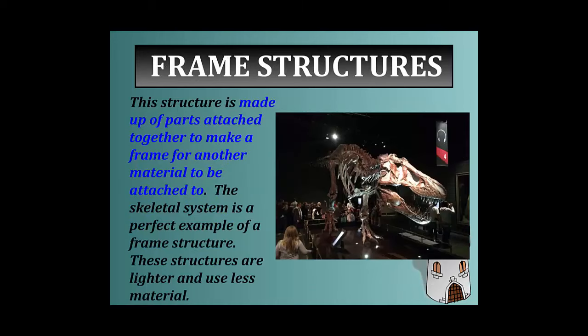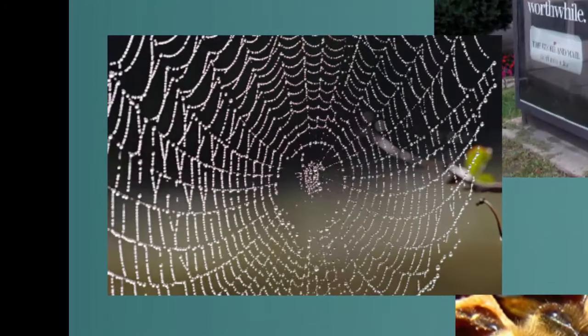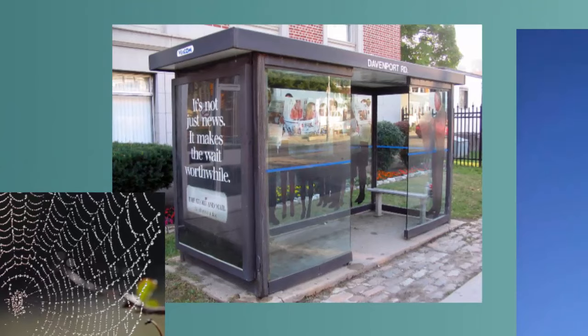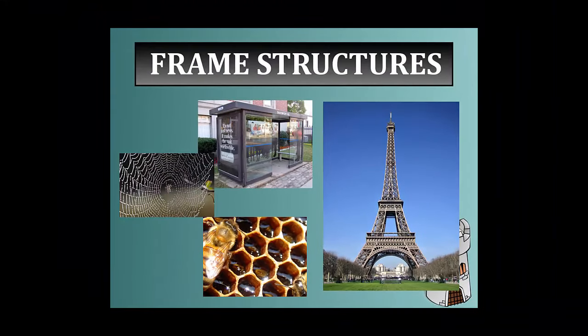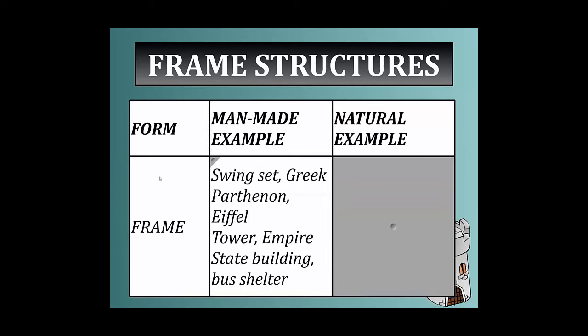Frame structures are made up of parts attached together to make a frame for another material to be attached to. The skeletal system is a perfect example of a frame structure. These structures are lighter and use less materials. Other frame examples include the spider's web, a bus shelter framed up with glass put on top, a beehive, and the famous Eiffel Tower. Additional examples are a swing set, the Greek Parthenon, the Empire State Building — a frame structure made of steel that has material put on top of it — and a spider web, honeycomb, and dinosaur skeleton.